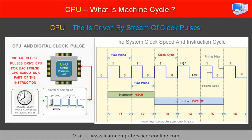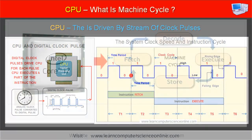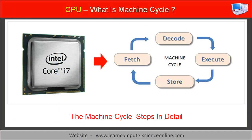Similarly, each part of the machine cycle needs a number of clock ticks to complete, such as the fetch, decode, execute, or the store operation. Let us now dive a bit deeper into the machine cycle to understand the various steps in the machine cycle.